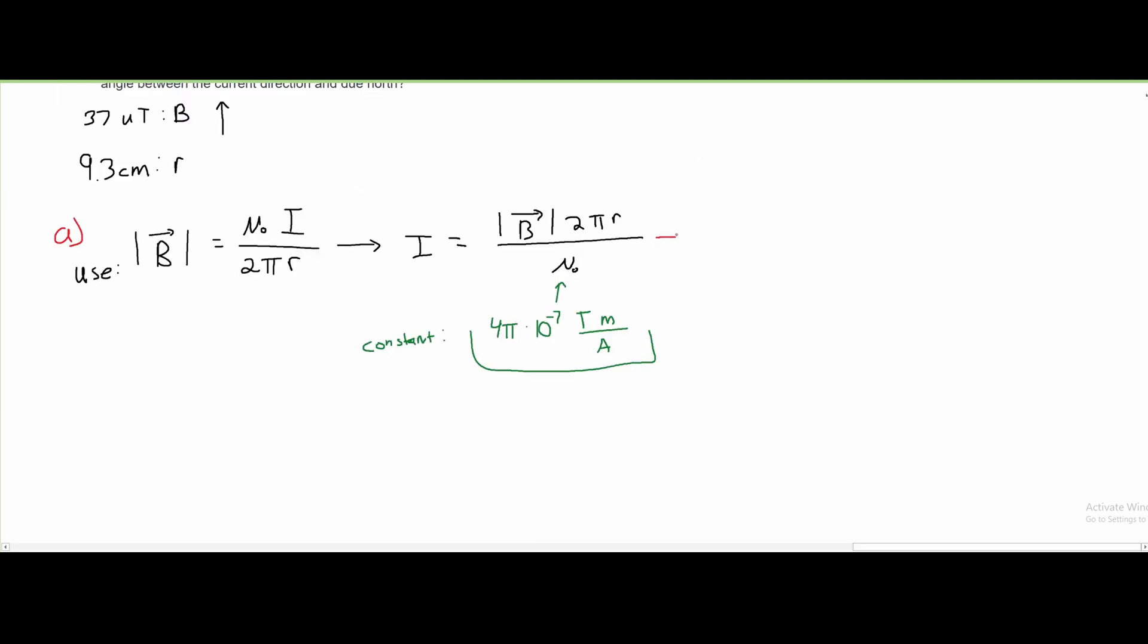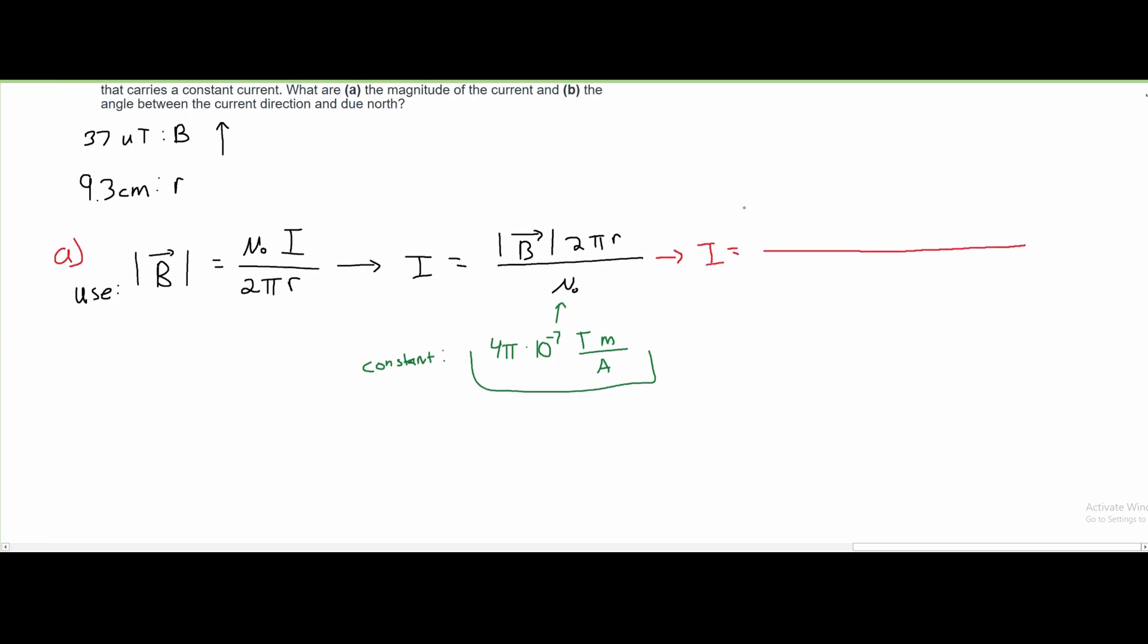From here, we're going to start to plug in our values, and we're going to have our I is equal to the numerator, which is 37 microteslas. We're going to convert that into teslas, so that's going to be 37 times 10 to the negative 6 T. We have our 2 pi, and then we have our R, which needs to be converted, so that's going to be 9.3 times 10 to the negative 2 meters. And then the denominator is just going to have the constant, which is 4 pi times 10 to the negative 7.